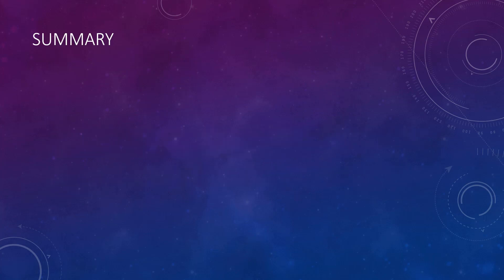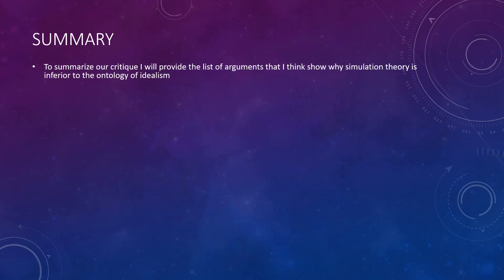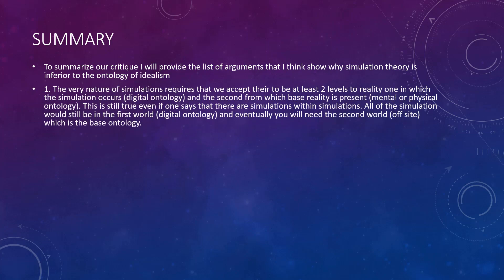So, to summarize our critique, I will provide a list of arguments showing why simulation theory is inferior to the ontology of idealism. First, the very nature of simulations requires that we accept at least two levels of reality: one in which the simulation occurs, which is the digital ontology, and the second from which a base reality is present, which again could either be mental or physical.